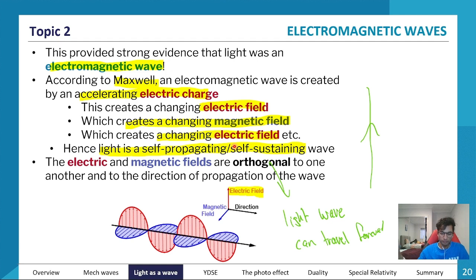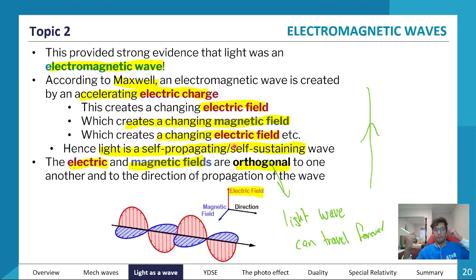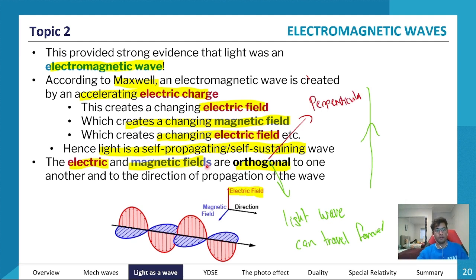Maxwell proposed that the electric field and magnetic field are orthogonal — that's just a fancy word for perpendicular. Because the magnetic field and electric field are perpendicular to each other, they can induce one another: the electric field creates a magnetic field, the magnetic field creates an electric field, and so on forever. This diagram is quite important and should go on your cheat sheet.